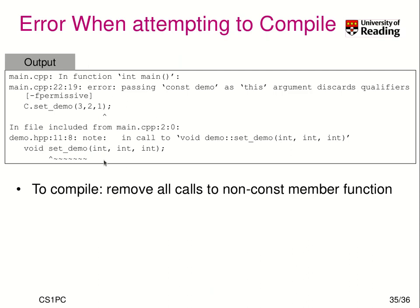Here we see the error message. Using the G++ compiler — part of the GNU C++ collection — we get the error: 'passing const demo as this argument discards qualifier'. This basically means you tried to access a const object in a non-const function.